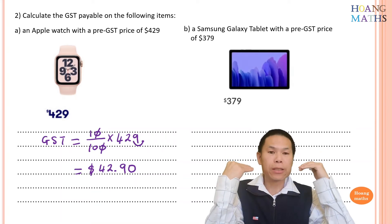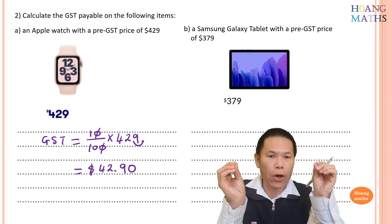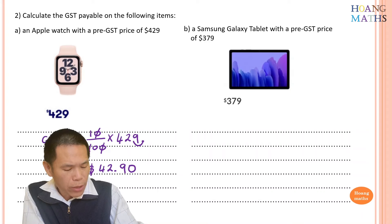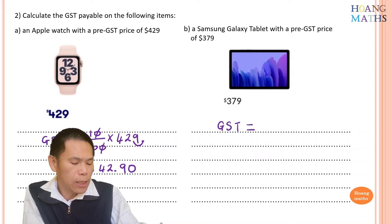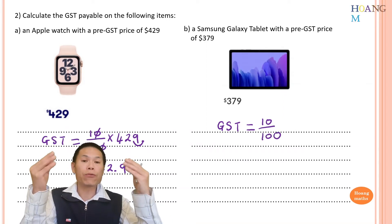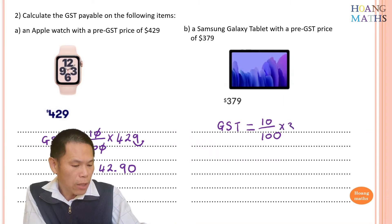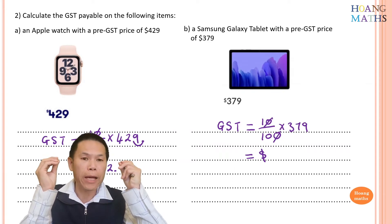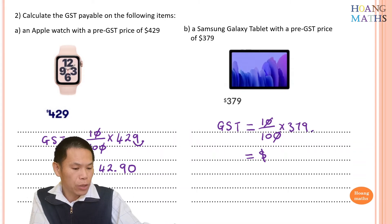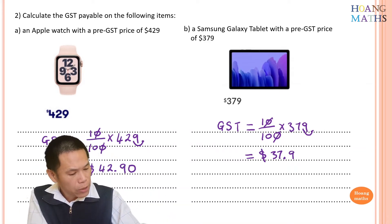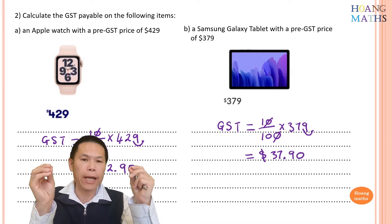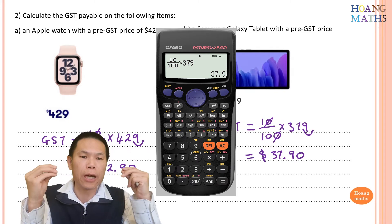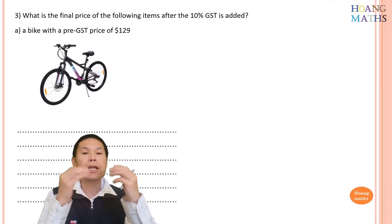Part b: work out the GST on $379. GST equals 10 over 100 — or 0.1 — times 379. Cancel and divide by 10: 379 divided by 10 gives 37.9. Written to two decimal places that's $37.90. You can also put 10 divided by 100 times 379 into a calculator and get the same answer.